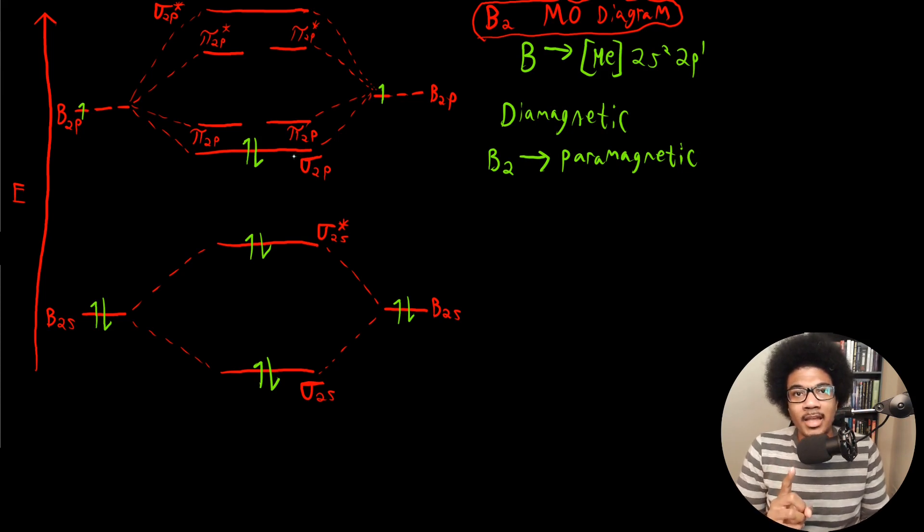Well, there's one assumption that we're making here that is untrue. So the assumption that we're making is that the S and P orbitals mix separately. So we're saying here that the S orbital mixes with the S orbital and the P orbital mixes with the P orbital. That's true. By and large, that's the largest mixing interaction, but it's not the only mixing interaction.